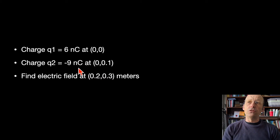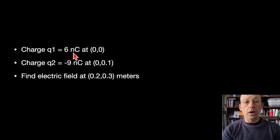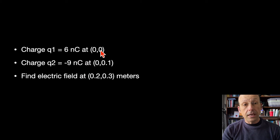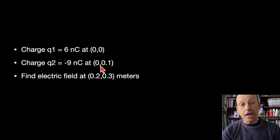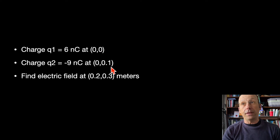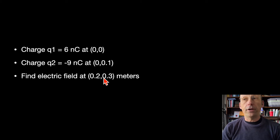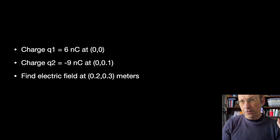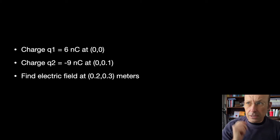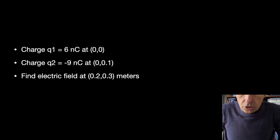Let's use this particular problem. Suppose I have a charge Q1 of 6 nanocoulombs at the origin, and charge Q2 of negative 9 nanocoulombs at 0.1 on the y-axis. I'm going to find the electric field at the point (0.2, 0.3). I made up these numbers, but it doesn't really matter — let's just get to it.